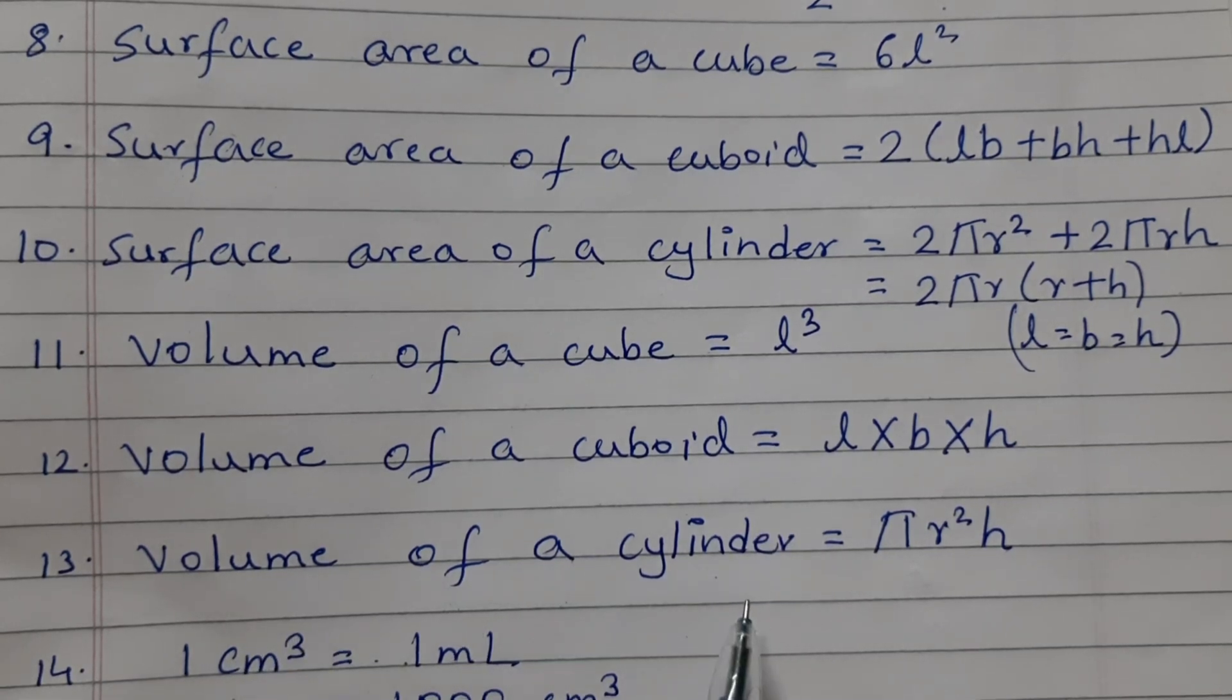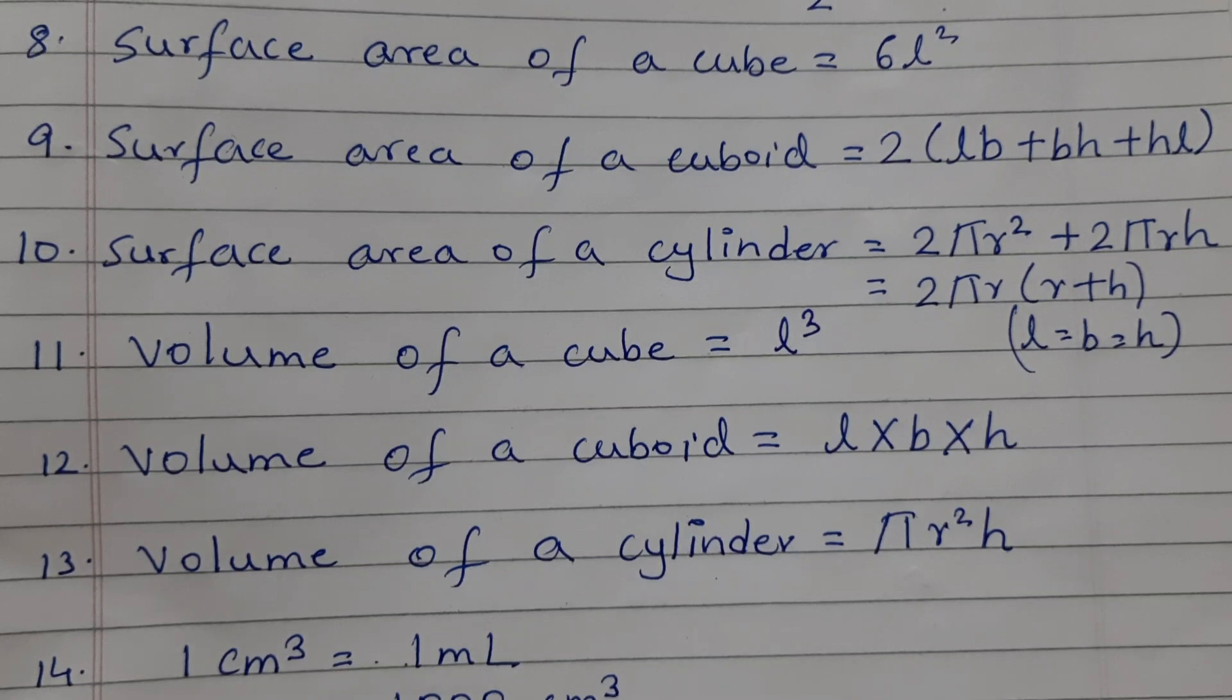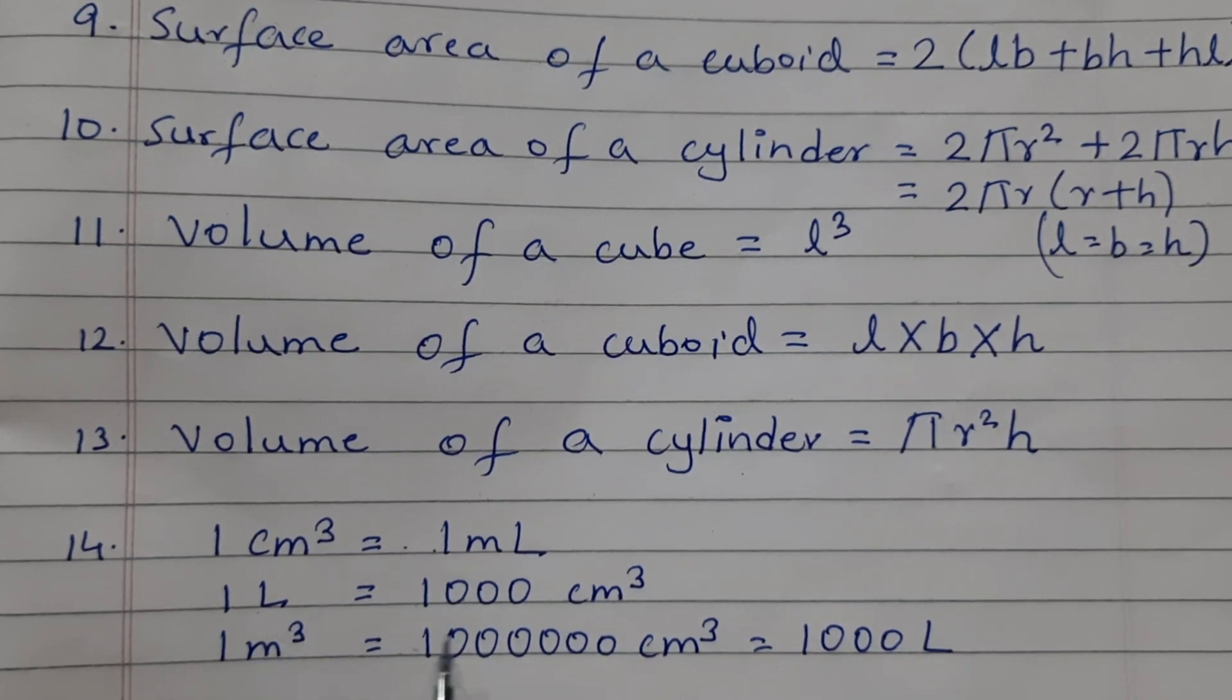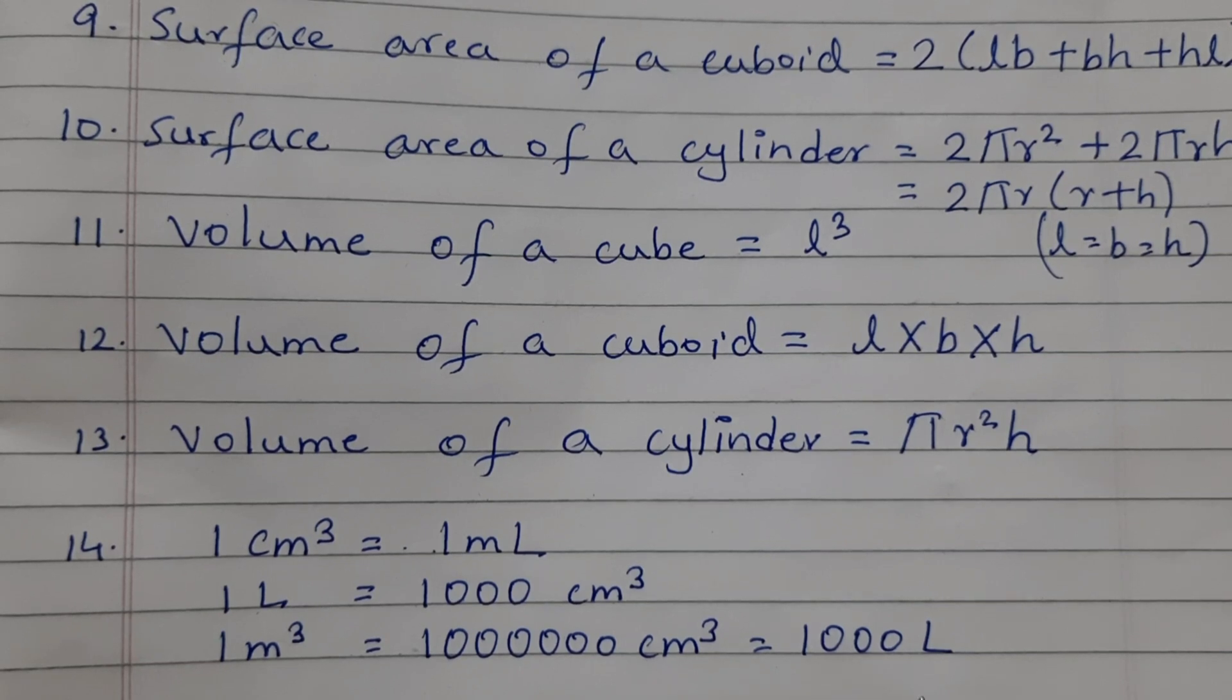Volume of a cylinder is equal to pi r squared h. And there are some conversion formulas that you need to know. 1 cubic centimeter is equal to 1 milliliter. 1 liter is equal to 1000 cubic centimeter. 1 cubic meter is equal to 10 lakh cubic centimeter which is equal to 1000 liter.